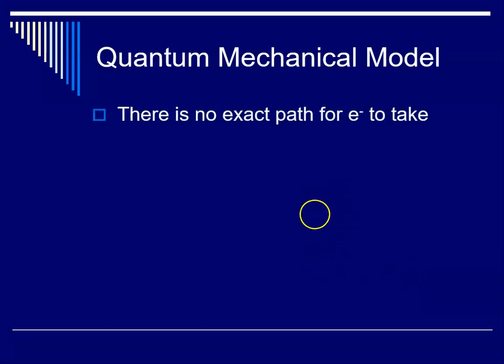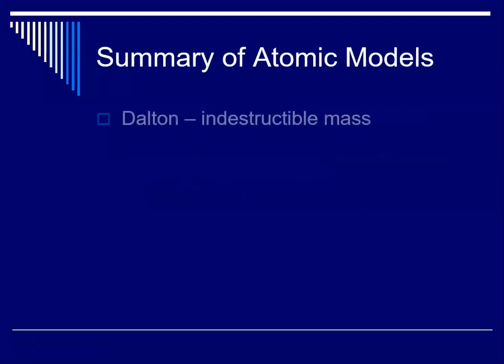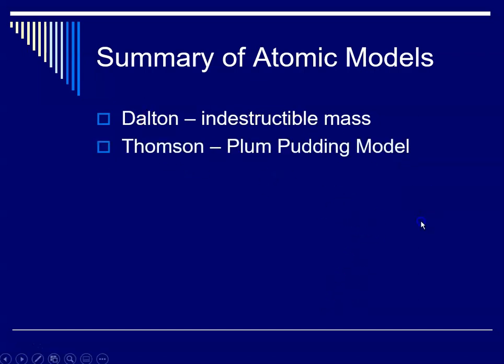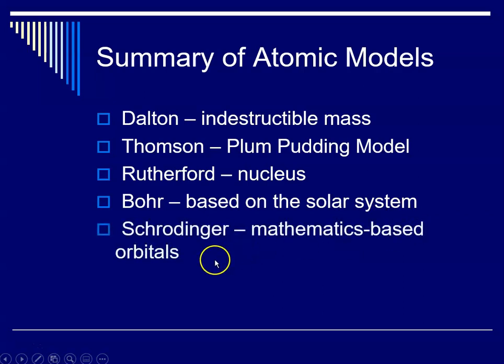According to this quantum mechanical model based upon Schrödinger's equation, there is no exact path for an electron to take. Instead there are areas of high probability to find an electron and areas with low probability. So the summary of the atomic models was Dalton, then Thomson, then Rutherford, then Bohr with the solar system model, and then we add Schrödinger who used mathematics-based orbitals.